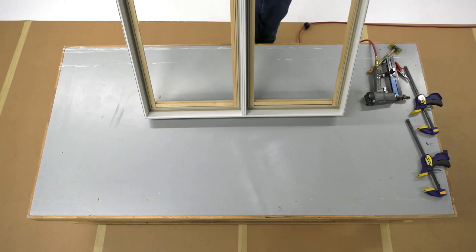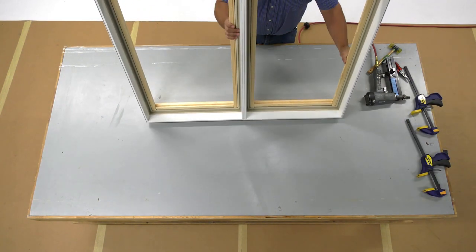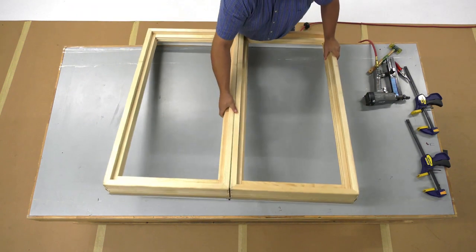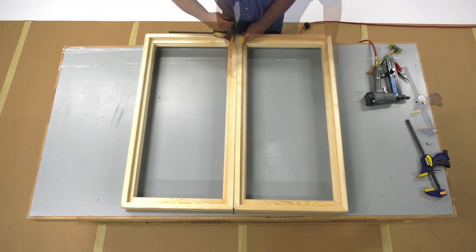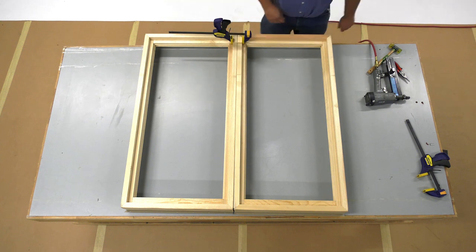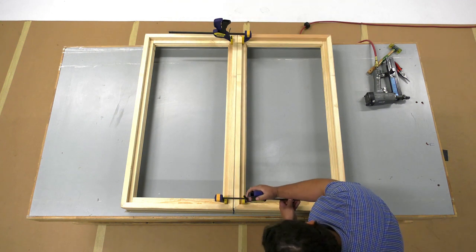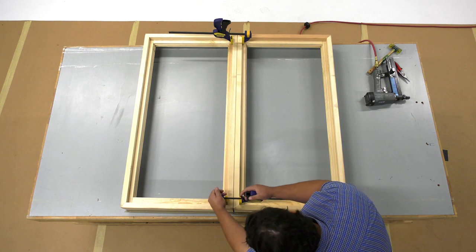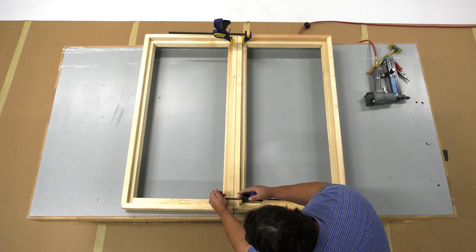Carefully flip the assembly over so the wood side is up. Clamp the assembly together ensuring that the interior is still flush. Make sure you attach your clamps so that you still have access to fasten the ends of the mull.